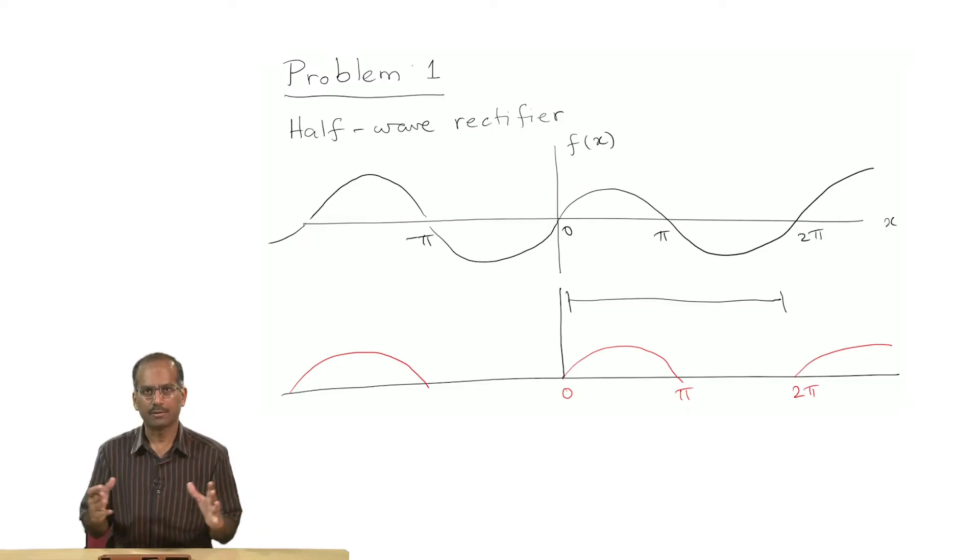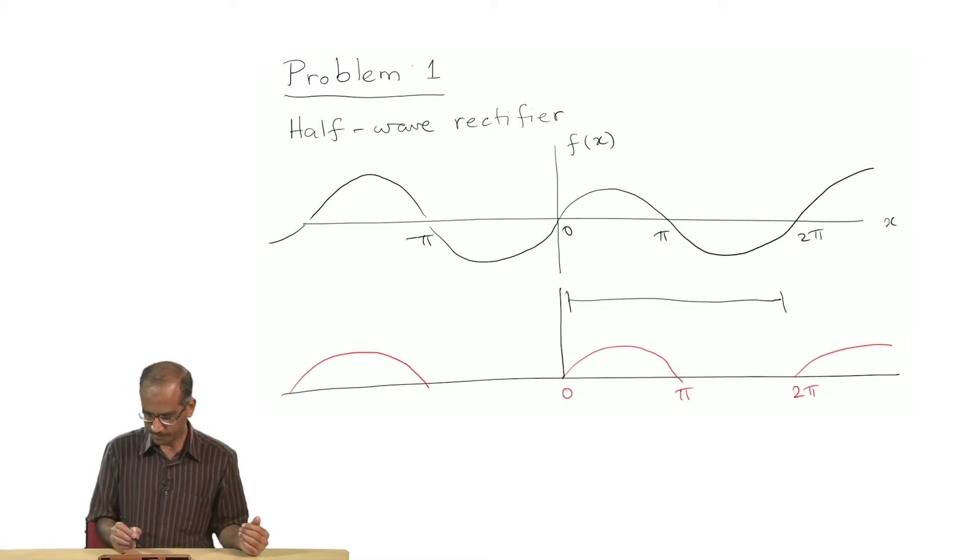Looking at the function you can make some inferences without actually doing any calculation. For instance, you can see that the average of this function is not going to be 0. Clearly the average is going to be somewhere here.